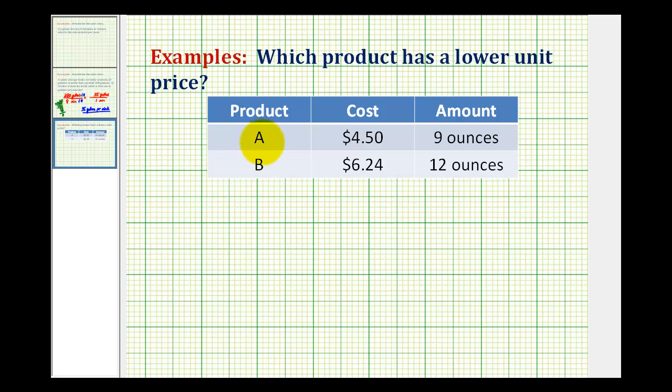So for example, here we have a product A that costs $4.50 for 9 ounces, and product B costs $6.24 for 12 ounces. So if we compare their unit rates or the cost per ounce, we can determine the best buy.